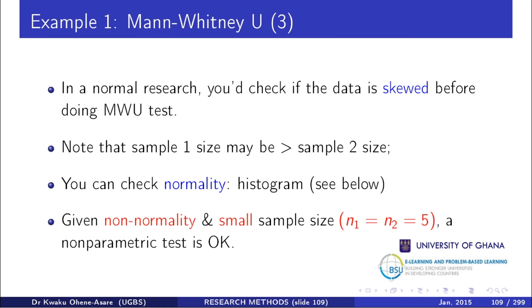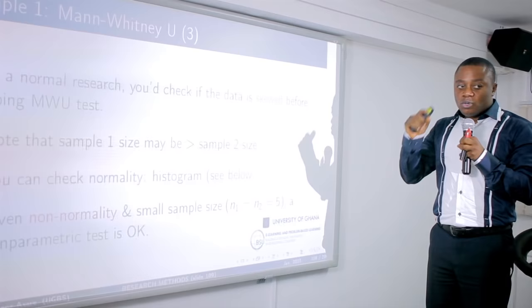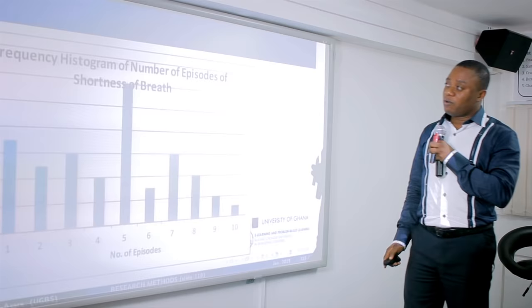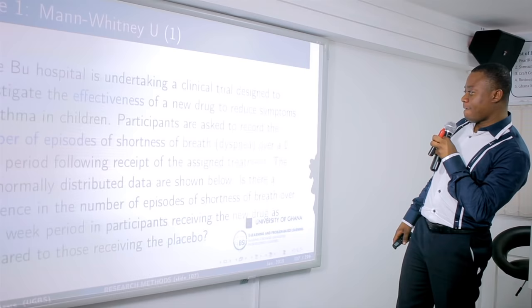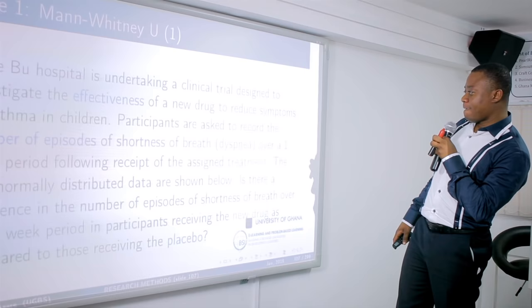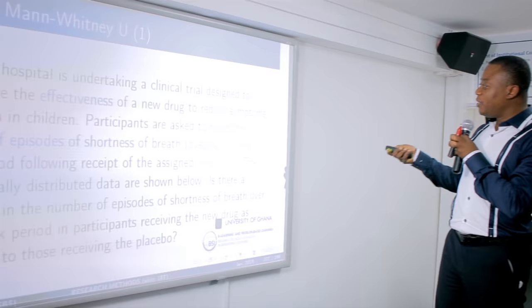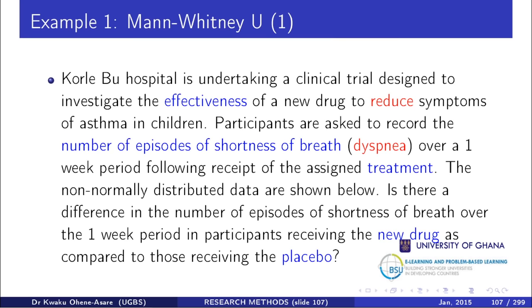In your normal research, plot the histogram in Excel and check normality before proceeding. Now let's write the null hypothesis. From the question — 'is there a difference in the number of episodes of shortness of breath over the one-week period between participants receiving the new drug and those receiving the placebo?' — you can write the null and alternative hypotheses.